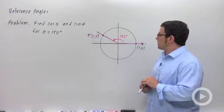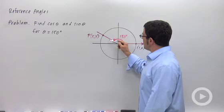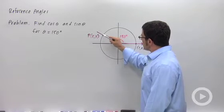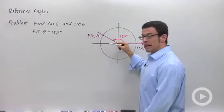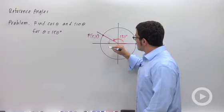The reference angle is the angle made by the terminal side of your angle and the x-axis. And in this case, it's 30 degrees.